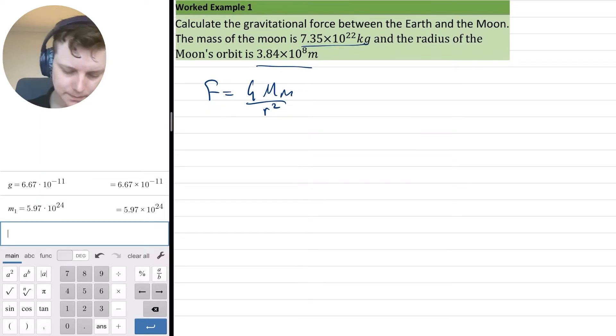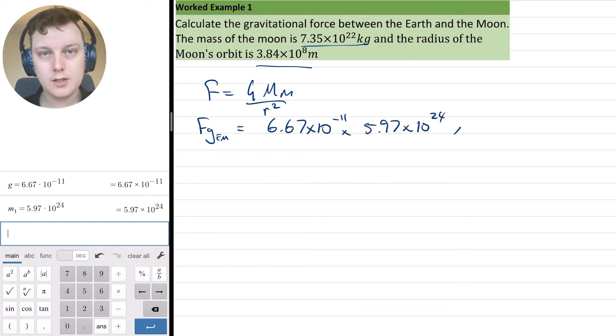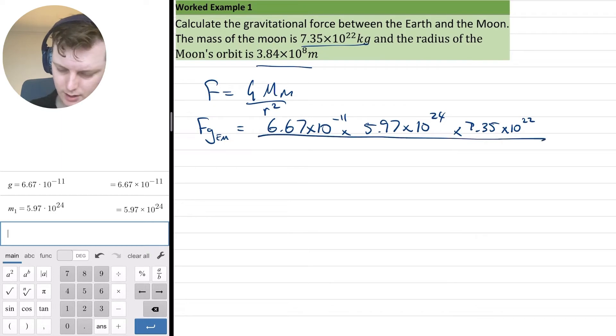So here are my two values. The force of gravity between the earth and the moon is equal to 6.67 times 10 to the negative 11 times the mass of the earth which we have is 5.97 times 10 to the 24 kg times the mass of the moon which is 7.35 times 10 to the 22 kg and divide that all by the radius of the orbit which is 3.84 times 10 to the 8 m and I've got to square it so I'm going to put brackets around it to make sure that my calculator knows what's going on.